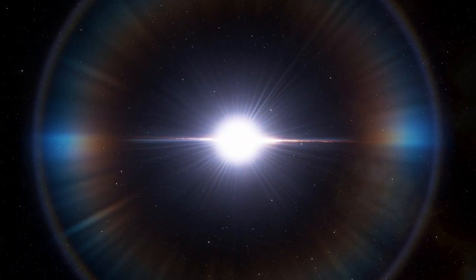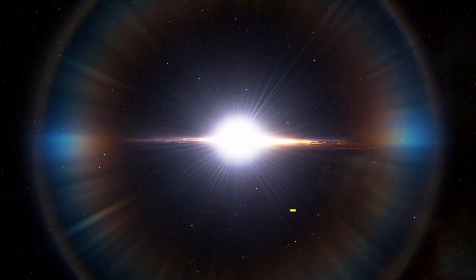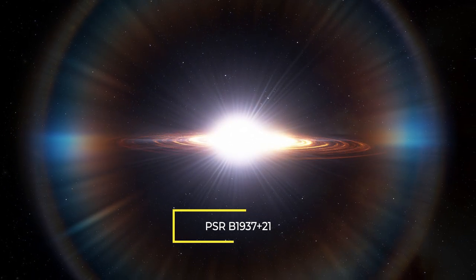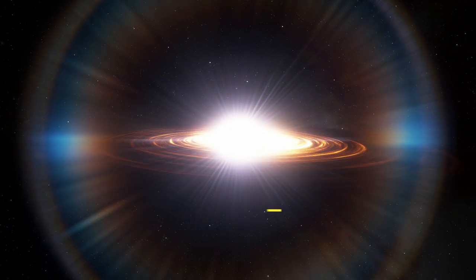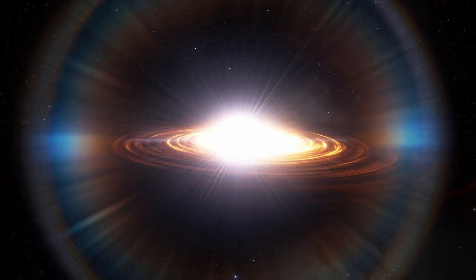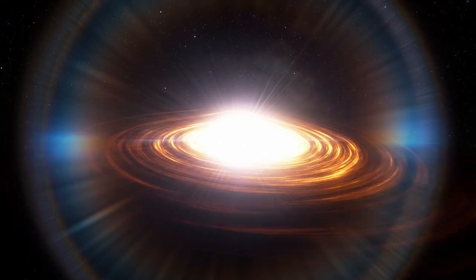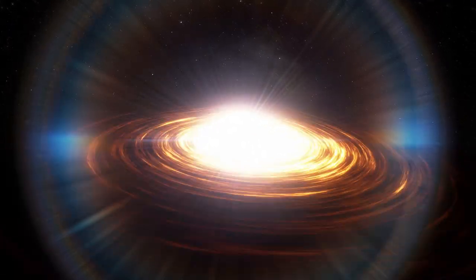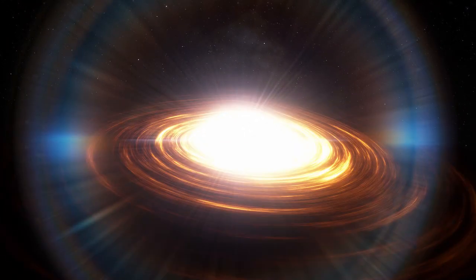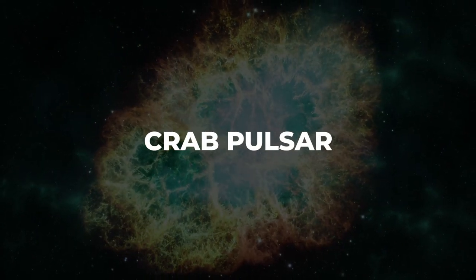The first millisecond pulsar to be observed was the celebrated PSR B1937-21, which was the fastest pulsar known for over 20 years. This pulsar had a relatively weak magnetic field and a spin period that was 20 times that of the next fastest pulsar, the Crab pulsar.